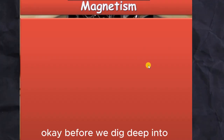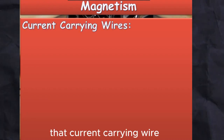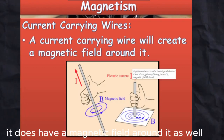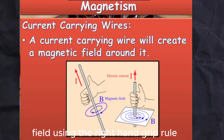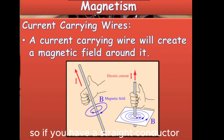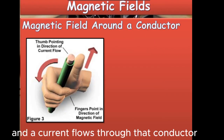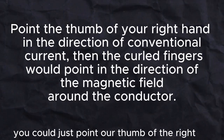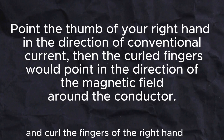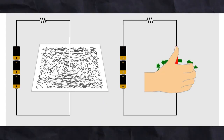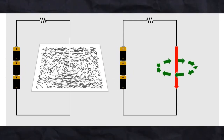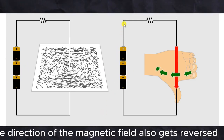Before we dig deep into understanding Lenz's Law, let's recap that a current-carrying wire does have a magnetic field around it. We can find the direction of that magnetic field using the right-hand grip rule. If you have a straight conductor and a current flows through it, point the thumb of the right hand in the direction of the current and curl the fingers — the curling of the fingers indicates the direction of the magnetic field. If the current is reversed, the direction of the magnetic field also gets reversed.